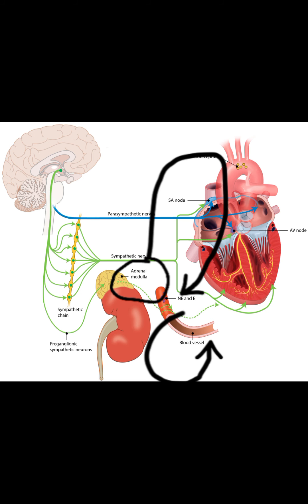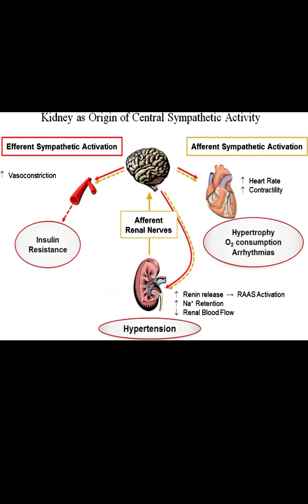Sympathetic activity also causes the adrenal gland to release epinephrine, which causes vasoconstriction and increased peripheral resistance, thereby raising blood pressure.